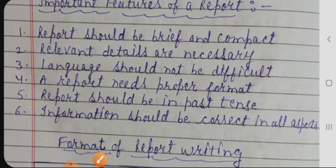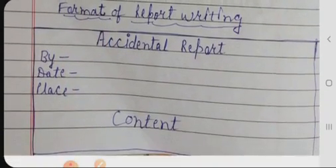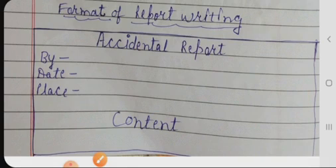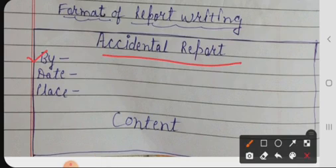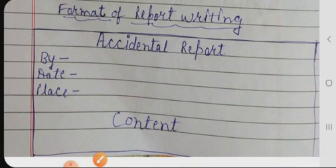Information should be correct in all aspects. Now we are moving towards the format of report writing. First of all, you have to keep in mind that you have to write a report in a box. You will write the heading here — for example, 'Accidental Report' — then by whom, you will write your name here. I am writing 'XYZ' but you will write your own name.